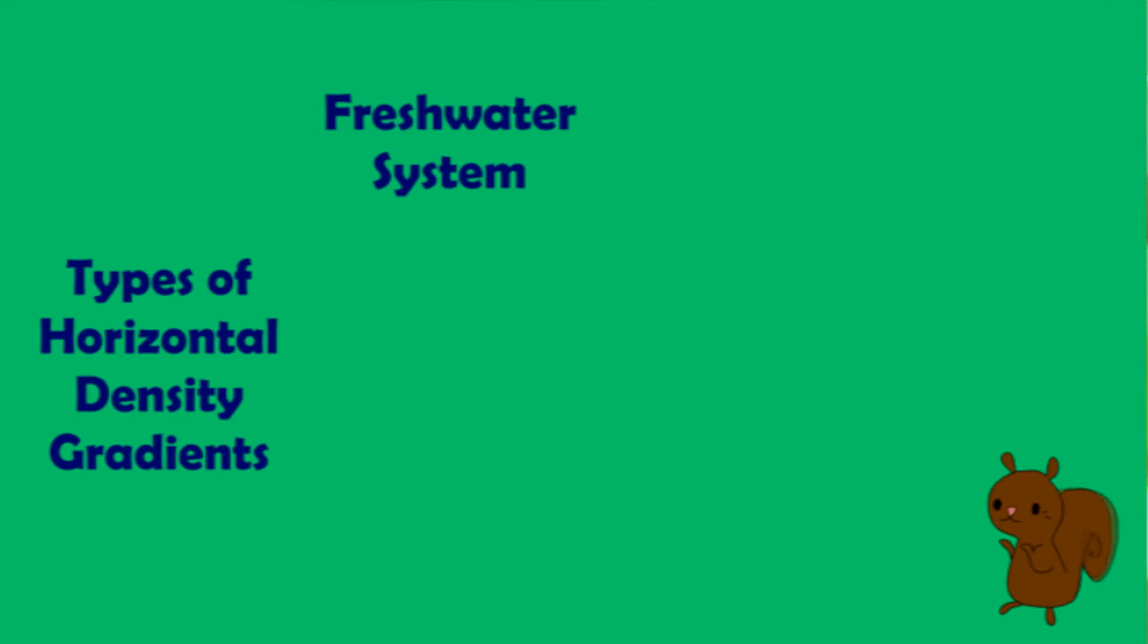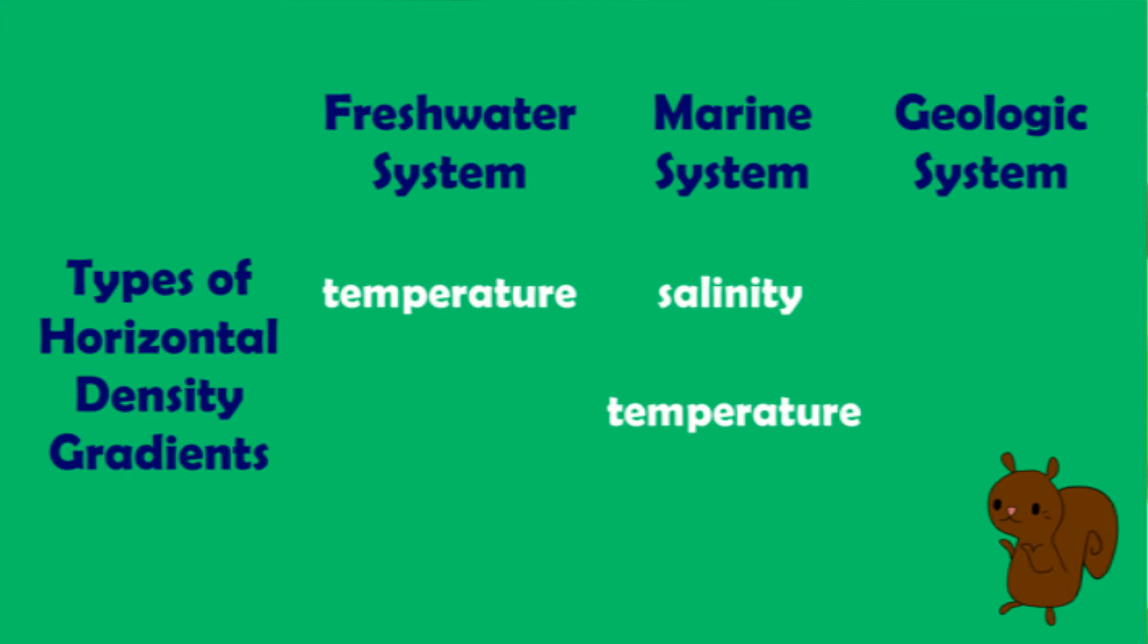In a freshwater system that would represent horizontal gradients of temperature. In a marine system it could be horizontal gradients of salinity and temperature, or in a geological setting it could be horizontal gradients of turbidity.